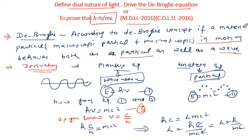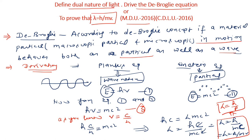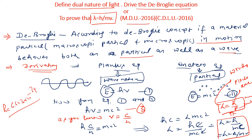One c cancels out, so lambda = h/mc. You can write this as lambda = h/mv, or further, since mass × velocity = momentum, lambda = h/p. This is the derivation for the de Broglie equation — lambda = h/mv = h/p. Here lambda is the wavelength associated with the matter wave, H is Planck's constant, P is momentum. The value of H is 6.623 × 10⁻³⁴. This is about the de Broglie nature of matter waves.